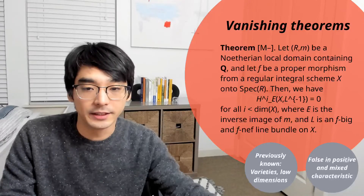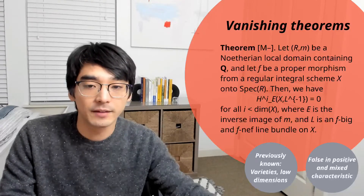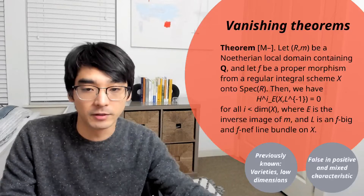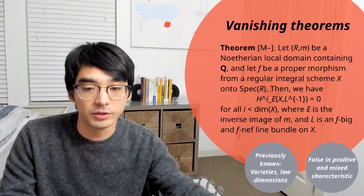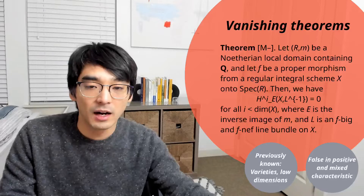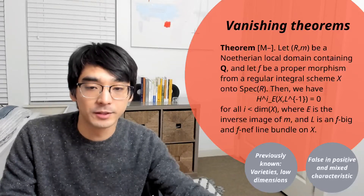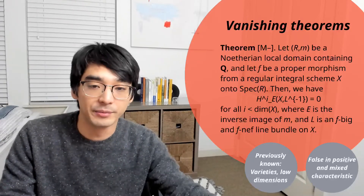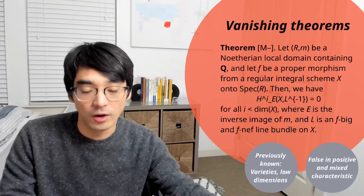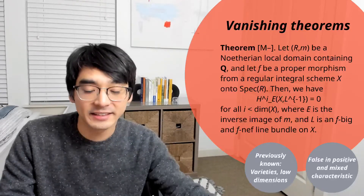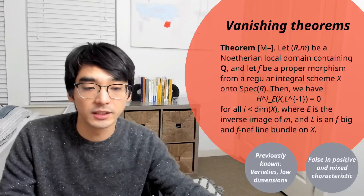What are my vanishing theorems for schemes in equal characteristic zero? Here's the statement of my vanishing theorem — it's a special case. What it says is that if you have a Noetherian local domain containing the rational numbers Q, and you have a proper morphism from a regular integral scheme onto the spectrum of R, then you have certain vanishings of local cohomology modules. This was previously known only for morphisms of varieties, or some analytic cases, and this statement with schemes was only known in low dimensions — when R is of dimension at most one, or when X is of dimension at most three. This is false in positive and mixed characteristics, and in that sense it's optimal: you can't replace the containing-Q condition with something more general.